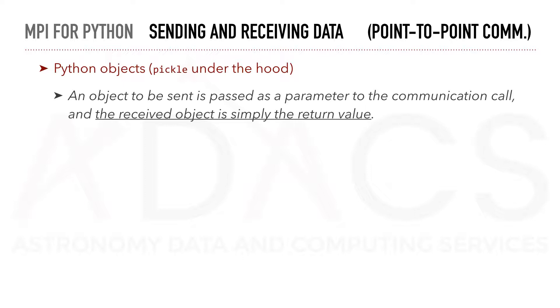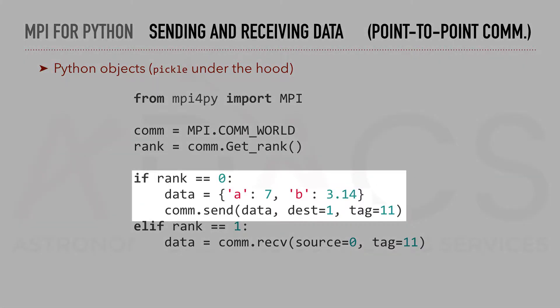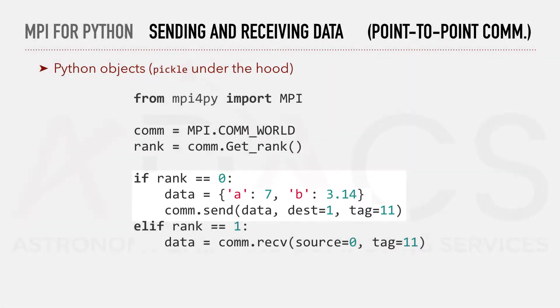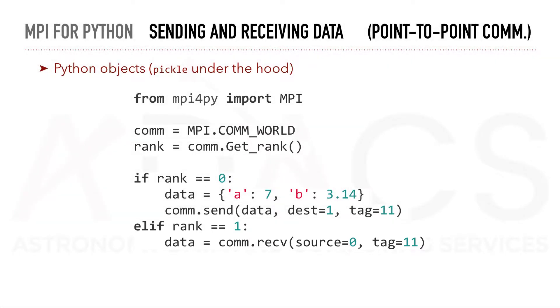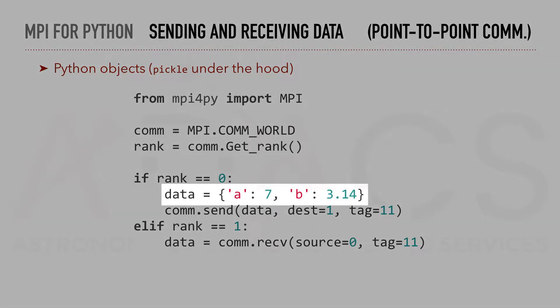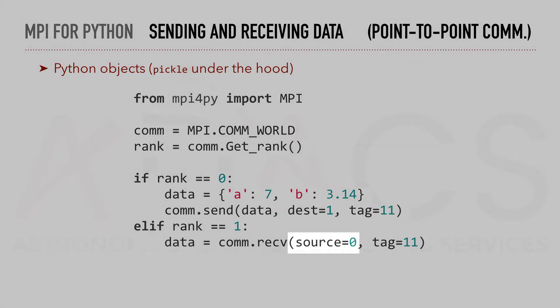Let's send data from one process to another. In practice, we will proceed in the following manner. If the rank of the process is zero, we will send data, and if the rank is one, we will receive data. We can note here that our generic Python object, our data, is a simple dictionary. In the send and receive function calls, we specify the destination and the source respectively. In addition, we add a unique tag to identify this transmission.